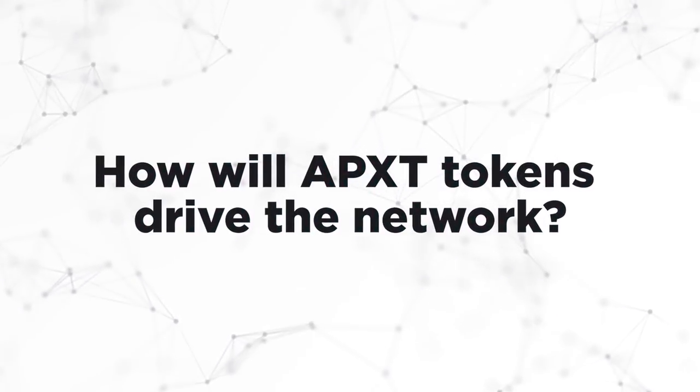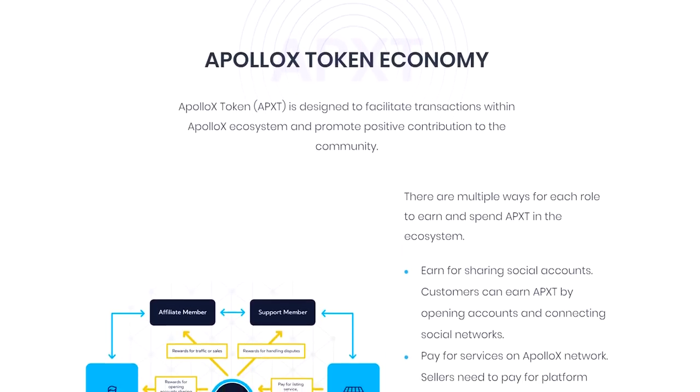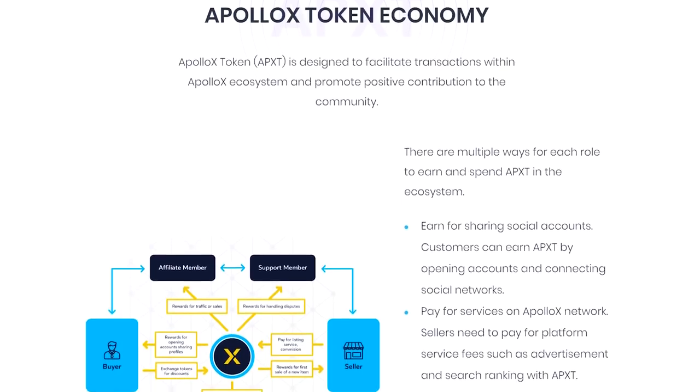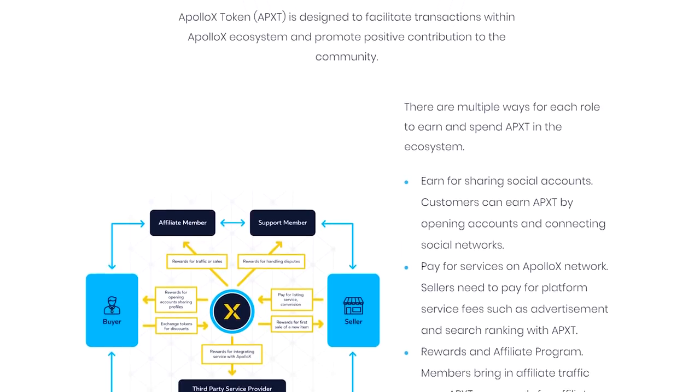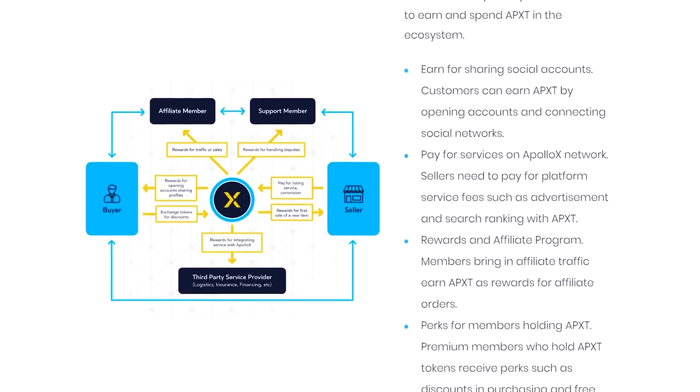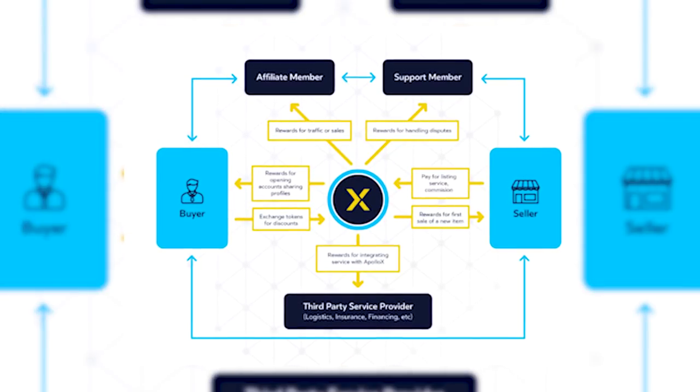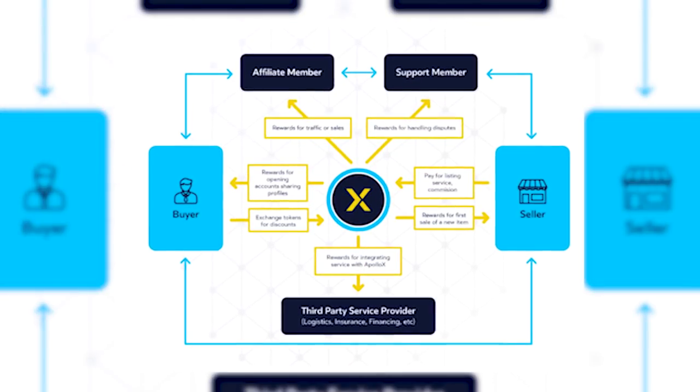How will APXT tokens drive the network? Apart from serving the main purpose of purchasing goods and services, APXT tokens will be used as an operating unit in loyalty and reward programs. In this case, tokens can be used to receive rebates. Apollo tokens will also be used as a means of payment for logistics services.